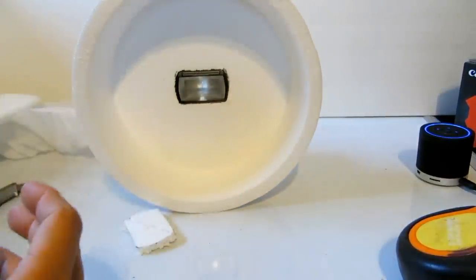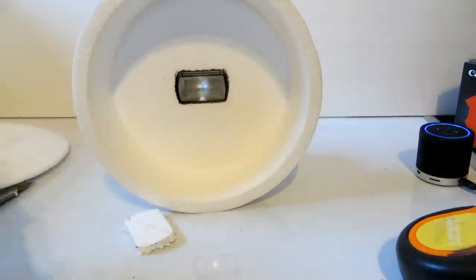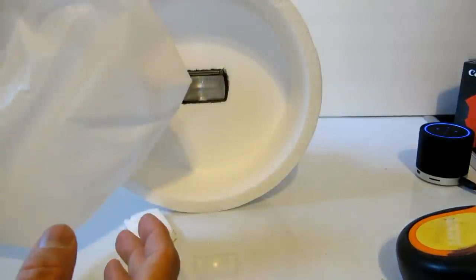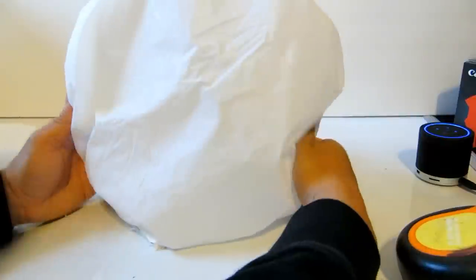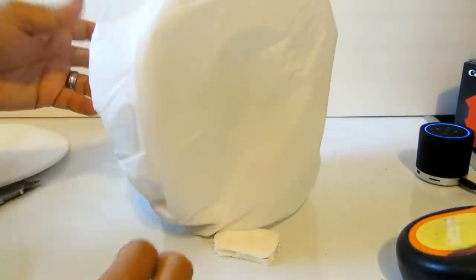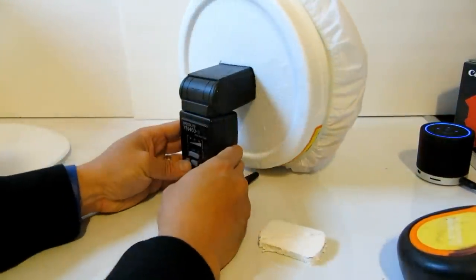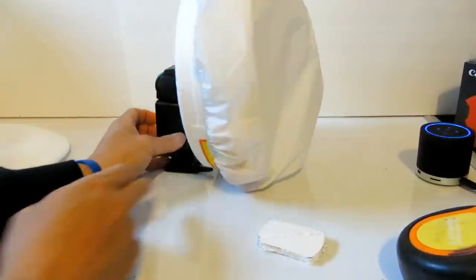And now, what's going to diffuse the light? Another item I got at the dollar store was a shower cap. So go ahead and put the shower cap over this. There you have it, a softbox.